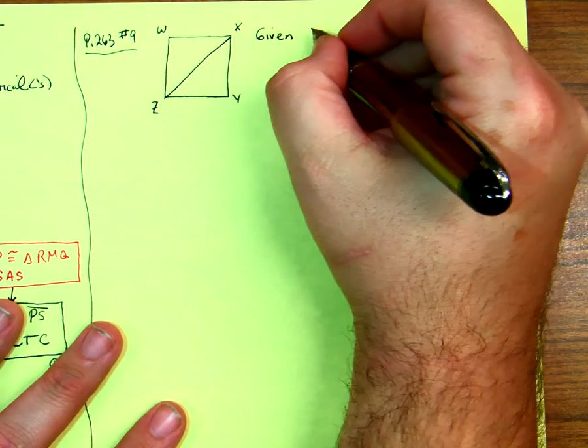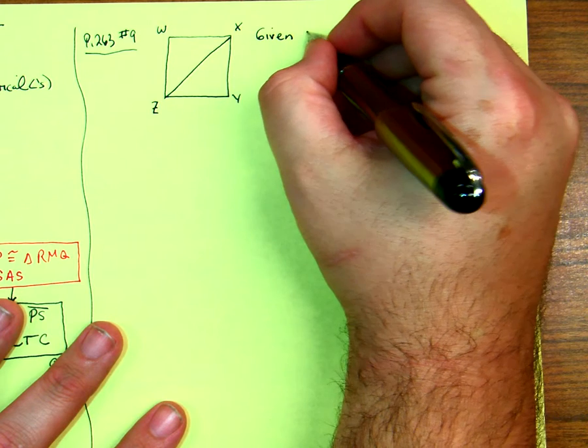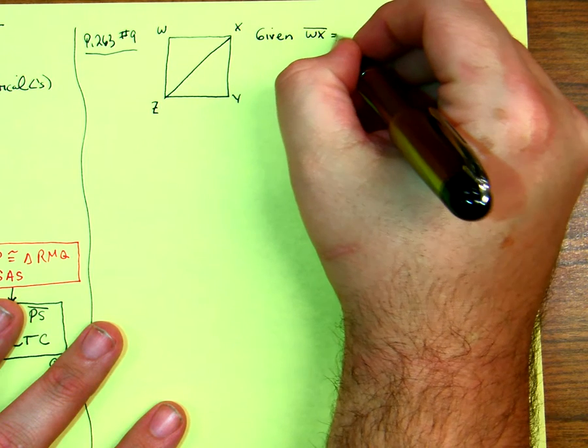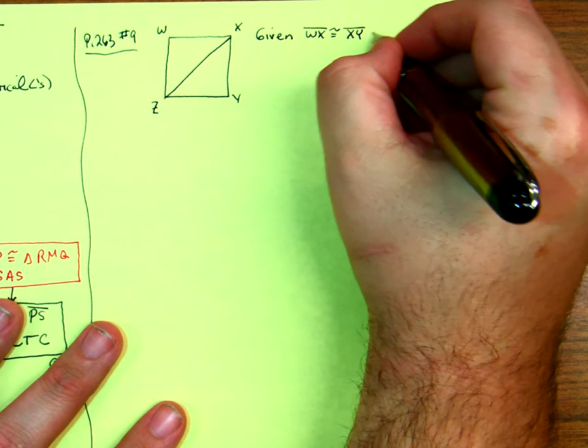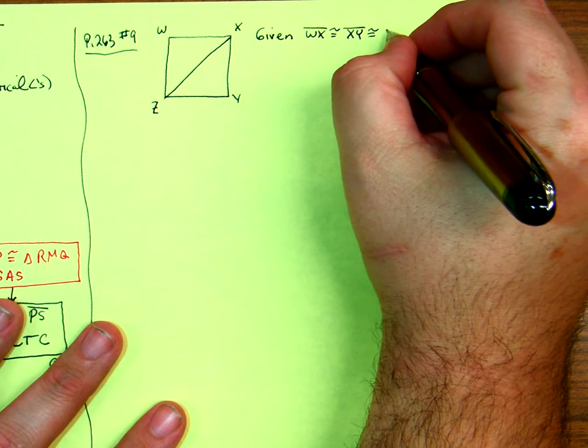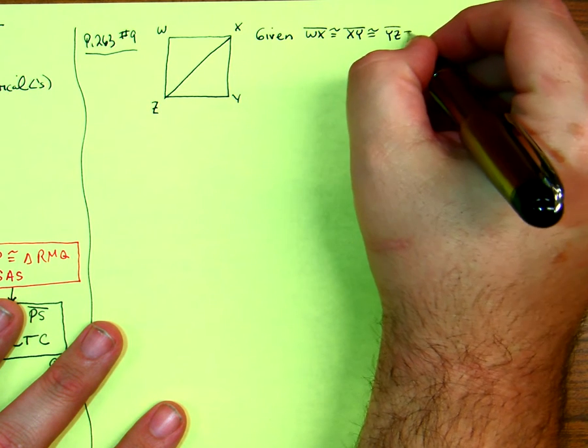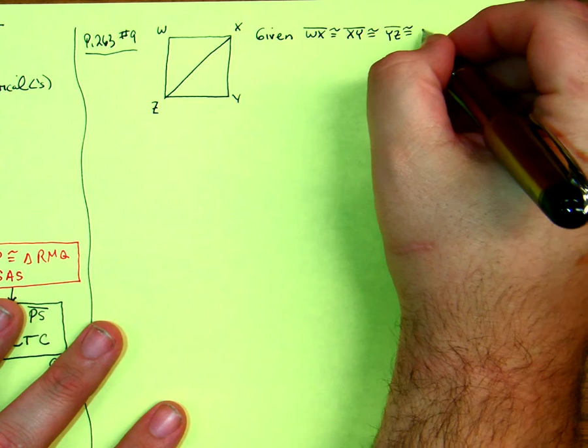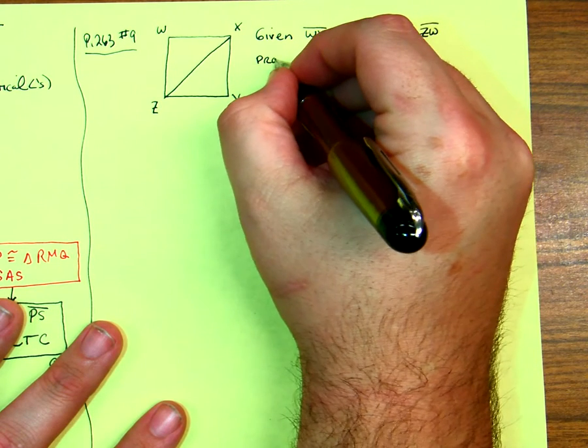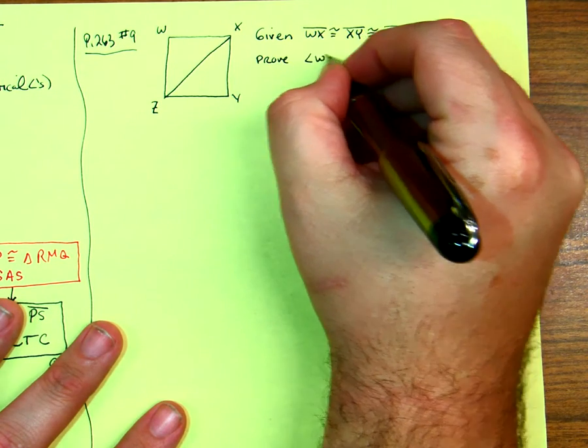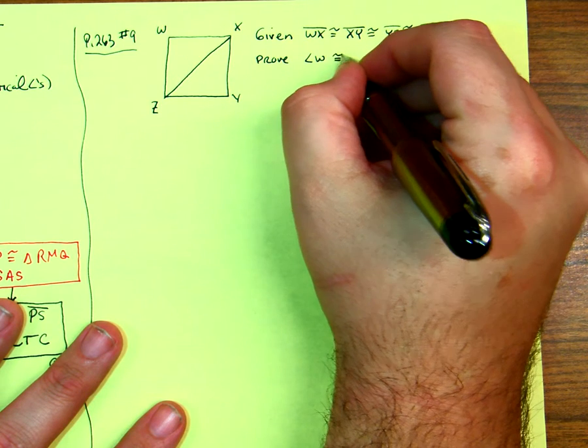We're given WX is congruent to XY, which is congruent to YZ, which is congruent to ZW. And we want to prove angle W is congruent to angle Y.